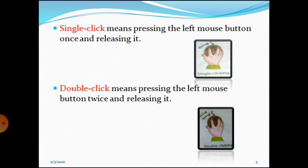तो आज हमने mouse के बारे में different words पढ़े. Clicking — mouse के किसी भी button को, left हो या right हो, finger की मदद से press करके जल्दी से छोड़ देना — इसको बोलते हैं clicking. Left click — mouse की left button को एक मरतबा click करना. Right click — mouse के right button को middle finger की मदद से click करना. और फिर हमने single click और double click पढ़े — single click means once on the left button, double click means twice on the left button.